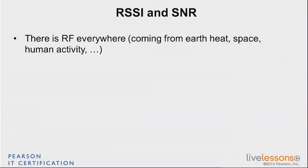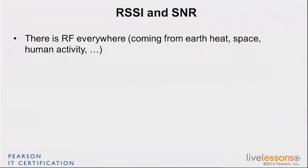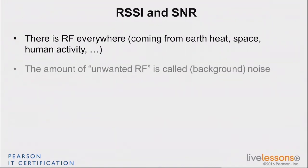There is RF everywhere. The universe is radiating RF, and that was measured a century ago. There is a clear measure of that energy coming from space. If you look at a 20 MHz channel, that represents about minus 101 dBm. So we already have some noise in the background coming from the heat of these planets and all the radiation of the universe. Of course, human activity adds a lot to that.